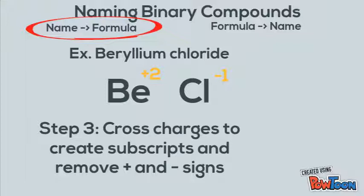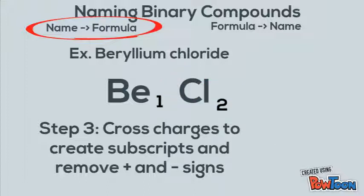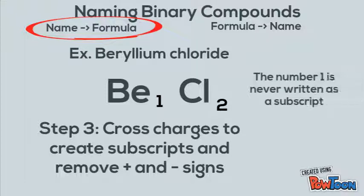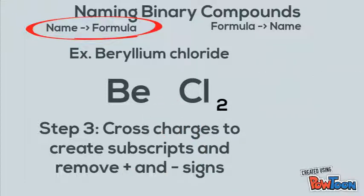Step number three is to cross the charges to create subscripts, and remove the positive and negative signs. The negative one from chlorine becomes the subscript for beryllium, and the positive two from beryllium becomes the subscript for chlorine. Remove the signs and slide those numbers down. We never write a subscript of one — the number one is always understood — so we remove it and slide beryllium next to chlorine.